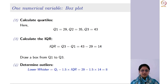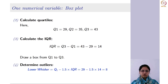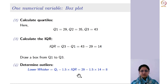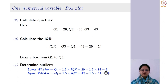The lower whisker is the line drawn from the left end of the box, and it goes up to the value Q1 minus 1.5 times IQR. I will explain why it is 1.5 shortly, but first let me complete this box plot example. Q1 is 29 minus 1.5 times 14, which is 8. Similarly, the upper whisker extends from the right side of the box. Substituting the values gives you 64.